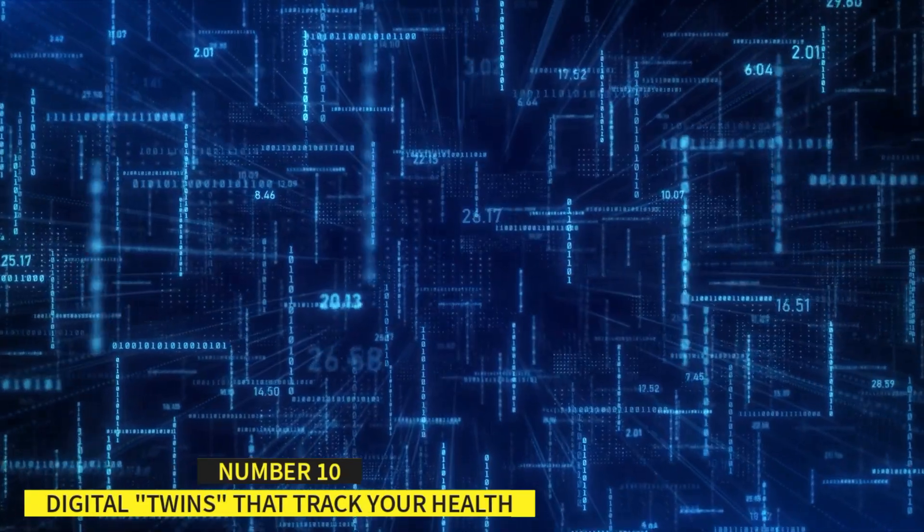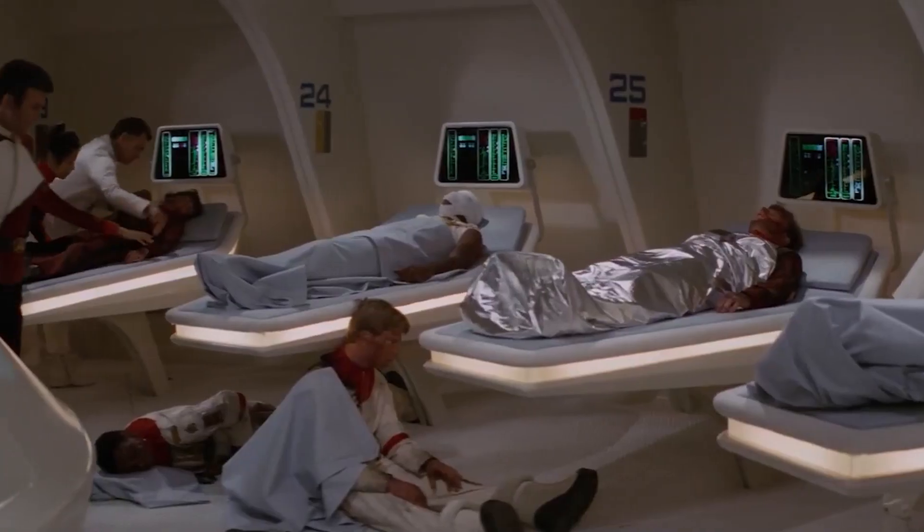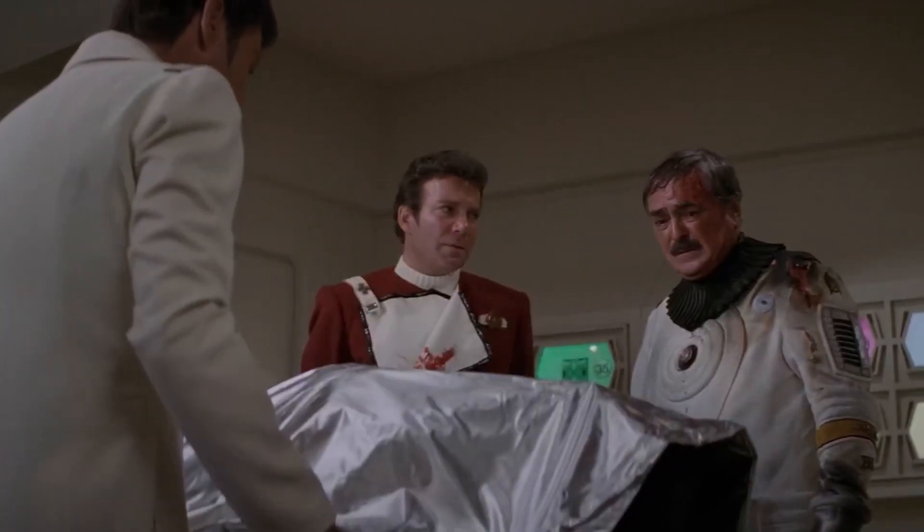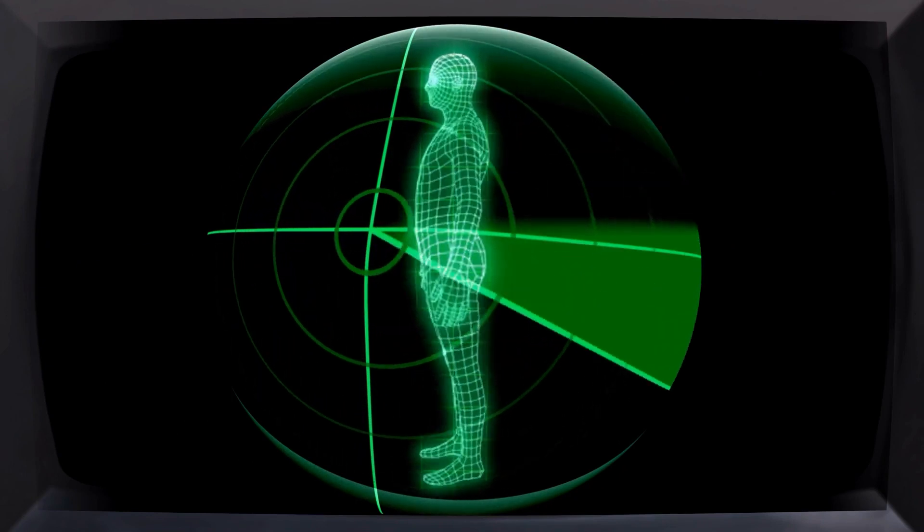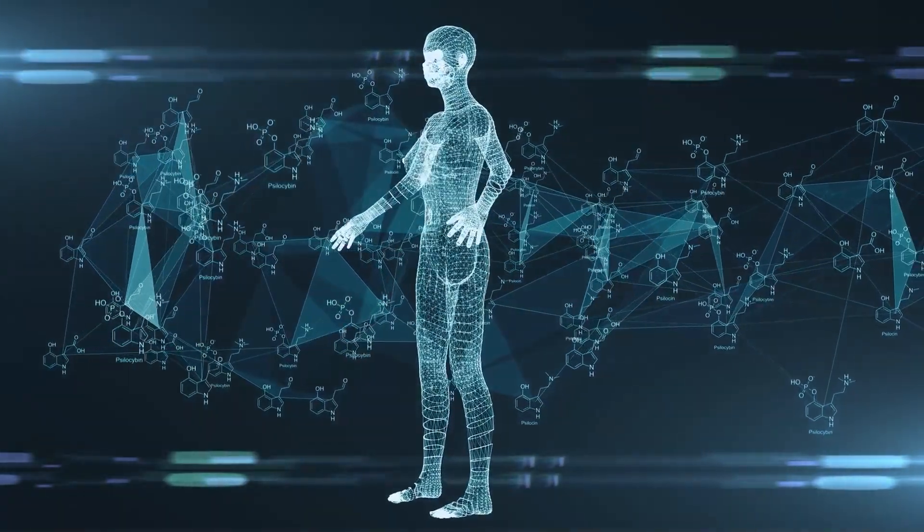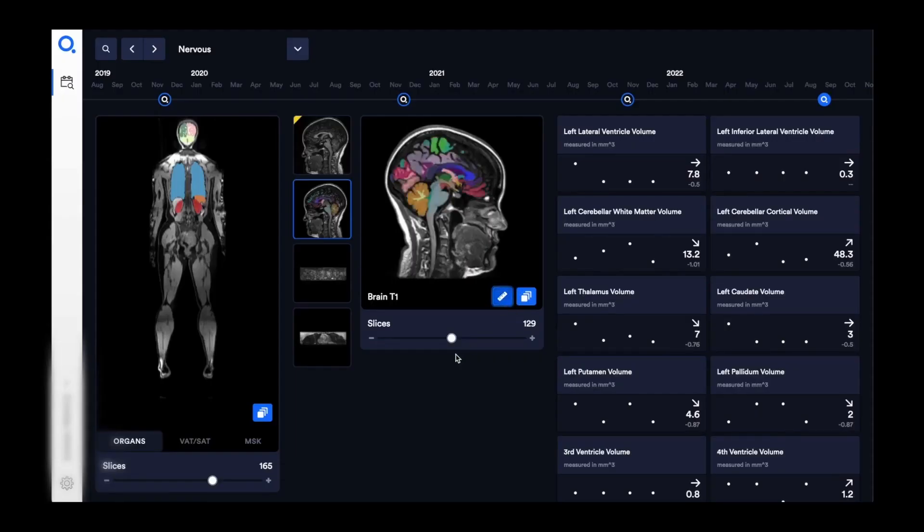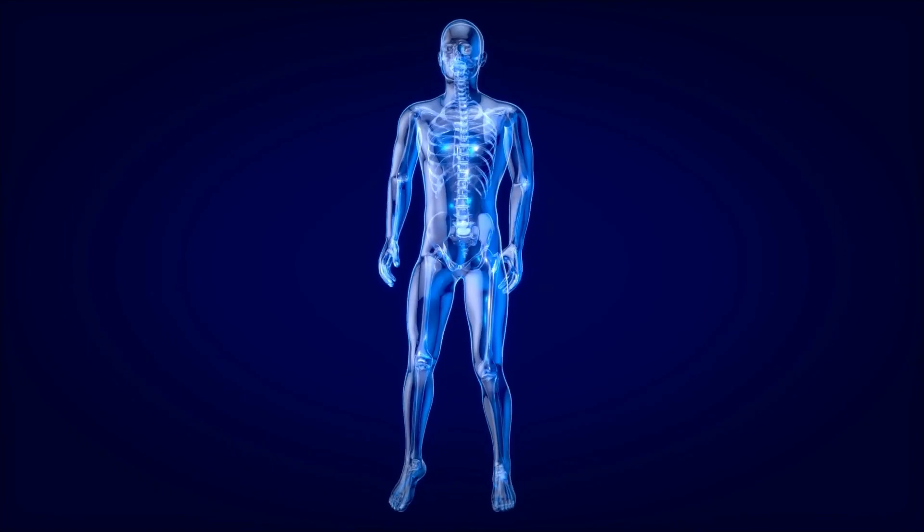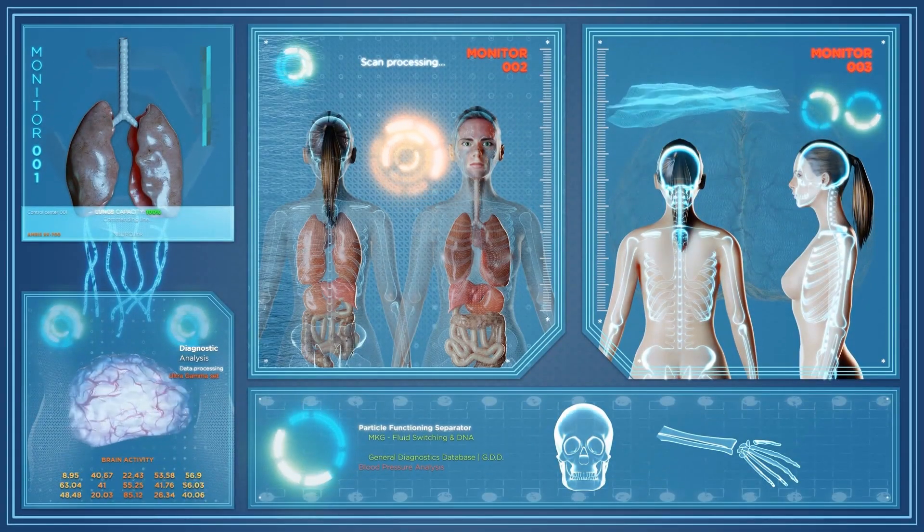Number 10, Digital Twins That Track Your Health. Are you a Star Trek fan? Just like the characters in the show, you could enter the medbay and have your entire body scanned digitally to look for indications of illness and injury. Well, that futuristic idea may be closer than you think. Thanks to Qbio, which intends to create a 3D digital avatar of your body, also known as a digital twin, that can be tracked over time and updated with each new scan.